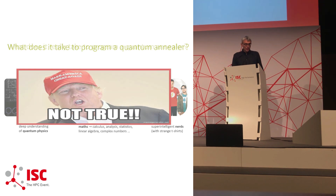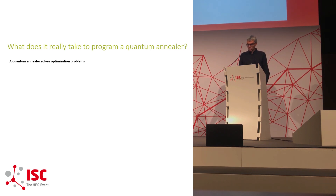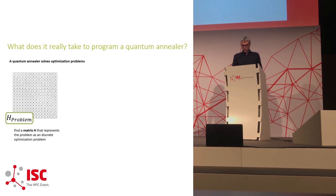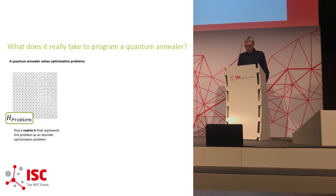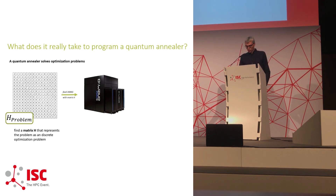As Crystal told us before, quantum computers are — or will be in the near future — experts in solving optimization problems. All you have to do is set up an objective function that returns a cost value for every possible candidate solution. For programming a quantum annealer, this boils down to finding a matrix that represents your problem. There are no complex numbers, no fancy mathematics, and no Schrödinger cats lurking around the corner. You just feed your matrix into a quantum annealer and the machine returns several solutions, of which you choose the one with the lowest energy.